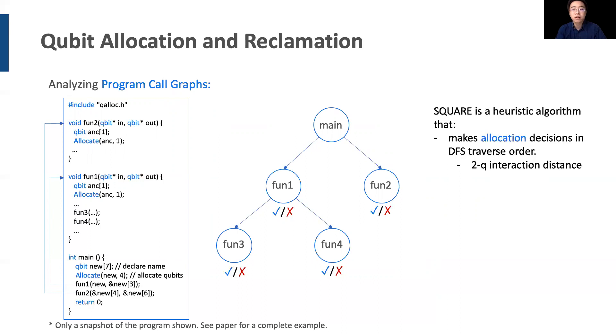Square is a heuristic algorithm that makes allocation and reclamation decisions by depth-first search on the graph. In particular, it makes allocation decisions when entering the node of a graph by allocating the available qubits with the minimum communication costs. Square makes reclamation decisions when exiting a node based on cost-benefit analysis.